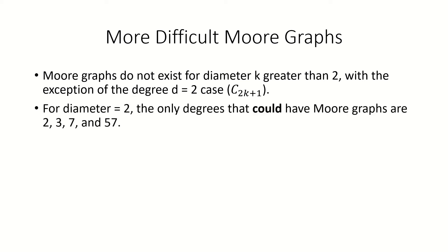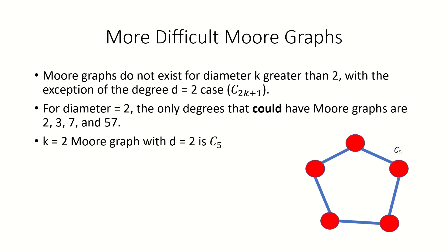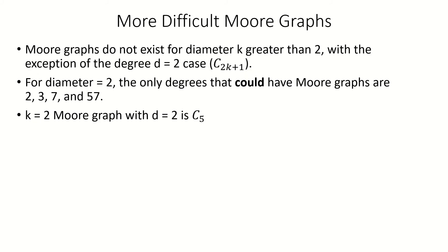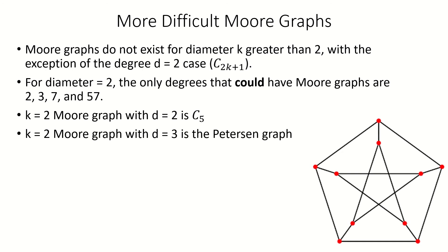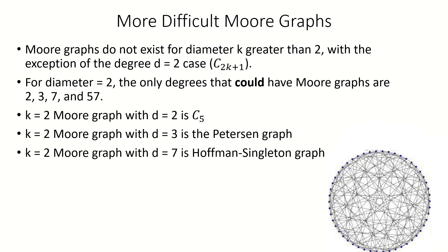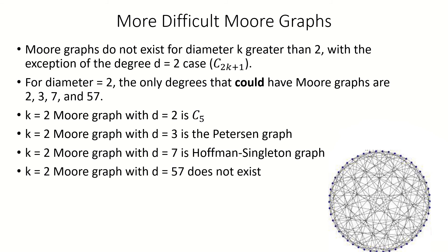Additionally, for graphs with diameter 2, we know that the only choices of degrees that allow for a Moore graph are 2, 3, 7, and 57. Three of these have been found. The Moore graph with diameter 2 and degree 2 is the odd cycle with 5 vertices. The Moore graph with diameter 2 and degree 3 is the Petersen graph, which is shown here. The Moore graph with diameter 2 and degree 7 is the Hoffman-Singleton graph, shown here. Up until last year it was unknown whether a Moore graph existed with degree 57 and diameter 2; however, its existence seems to have been disproven last year. I've posted the paper in the description.